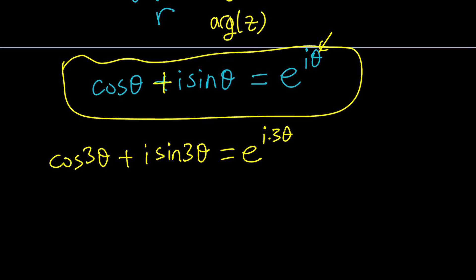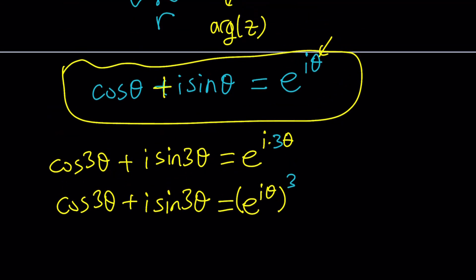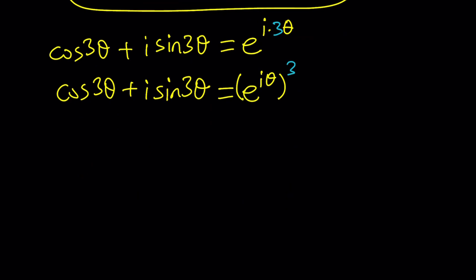Using rules of exponents and since 3 is a real number this can be done easily. We can write this as e to the I theta to the power 3. Why? Because this 3 here is basically going to be multiplied by the other exponent. So what do we get from here? We do get a beautiful identity because e to the I theta is cosine theta plus I sine theta in polar form. So now here's what we get.